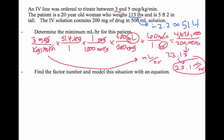With titration problems, the reason we model this with an equation is that the patient may not respond to 3 micrograms per kilogram per minute. We may need to increase the dose — maybe by a tenth of a microgram per kilogram per minute. Rather than repeating all the same dimensional analysis steps every time, I can find a model — a formula — specifically relating the dose to the rate, since in these problems the dose is directly related to the rate: D equals K times R.